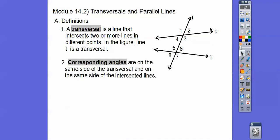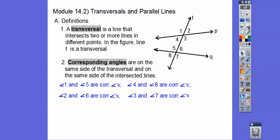Corresponding angles are the angles that are on the same side of the transversal and on the same side of the intersecting lines. Imagine if line P and line Q slid down together and became one line — can you see angle 1 sliding right down on top of 5, and 4 sliding down on 8, and 2 and 6 sliding together, and 7 and 3? Those are the corresponding angles.